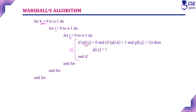In the adjacency matrix, if P of i comma j position is 0, we check if P of i comma k position is 1 and P of k comma j position is also 1. If these two positions are 1, we can replace that 0 with 1. This logic is implemented throughout Warshall's algorithm using the adjacency matrix.